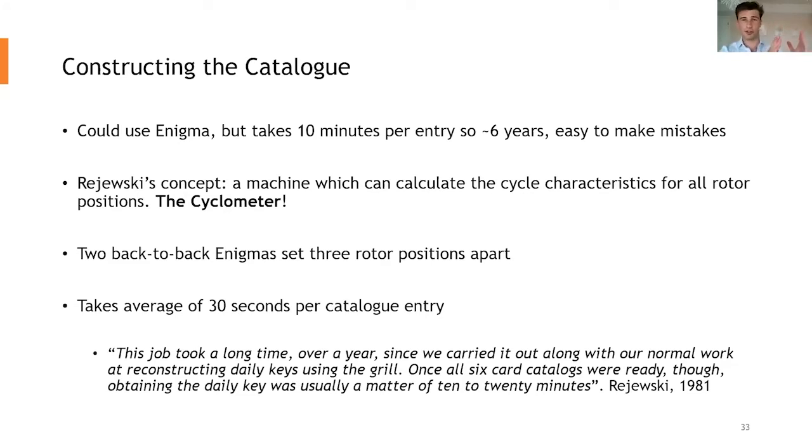It's essentially two back-to-back Enigmas set three rotor positions apart. So the first rotor position is, in essence, let's call it permutation A. Sorry, the first rotor system is permutation A, and the second rotor system is set three steps on ahead of that. Thus, in essence, permutation D, equally BE or CF, etc. We'll just say A and D for now. What the cyclometer does, instead of taking about 10 minutes of pet entry, it takes about 30 seconds per catalogue entry. And Tim will show us this later.